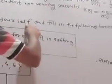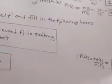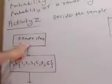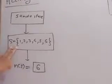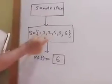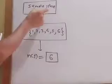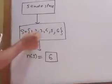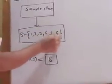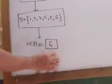This is the first activity. Second activity. Decide the sample space yourself and fill in the following boxes. Sample space. I take a die thrown once. So numbers from 1 to 6. So sample space is S equal to 1, 2, 3, 4, 5, 6. Therefore N(S) is equal to 6.